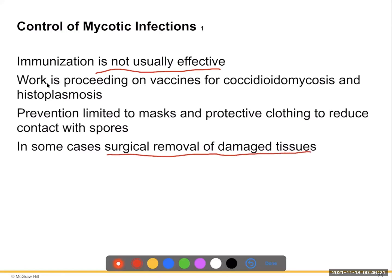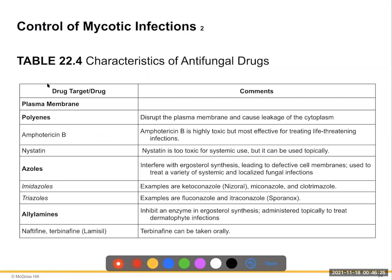Prevention is limited to masks and protective clothing to reduce contact with spores. In some cases, surgery and removal of damaged tissue are required. Antifungal drugs target the plasma membrane using polyenes — Amphotericin B and Nystatin. Amphotericin B is highly toxic but the most effective for treating life-threatening infections. Nystatin cannot be used systemically due to toxicity; it is used topically or as a rinse, such as for fungal infections on dentures in nursing home patients.